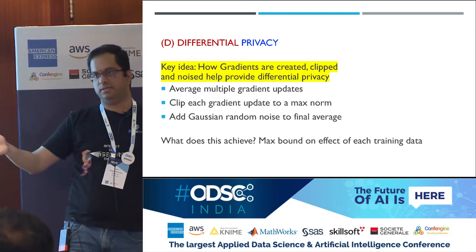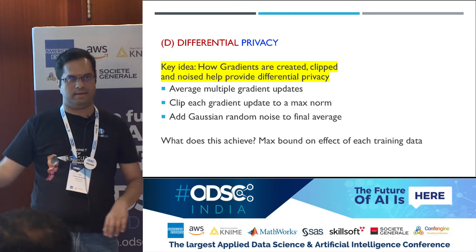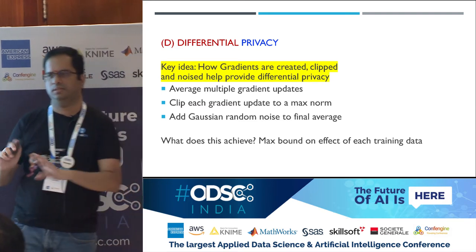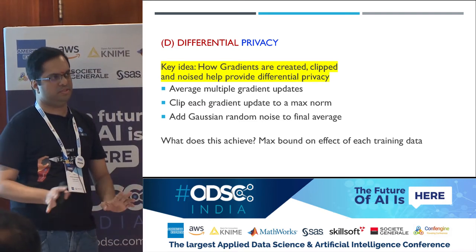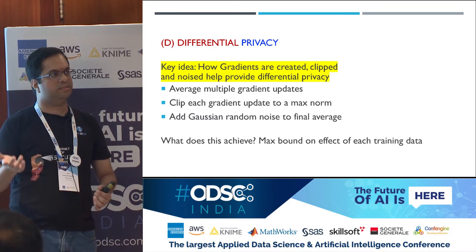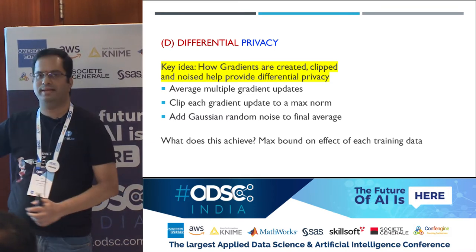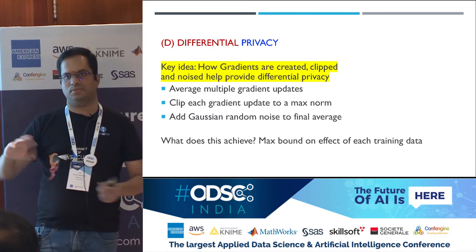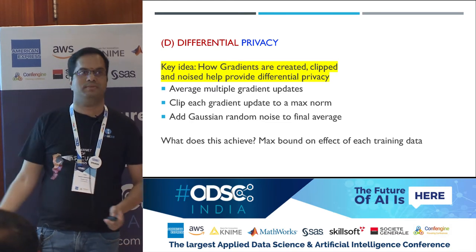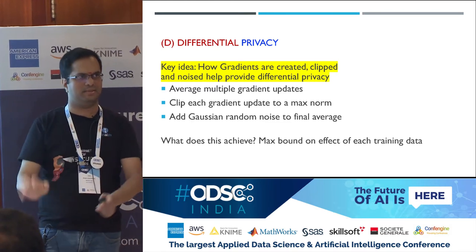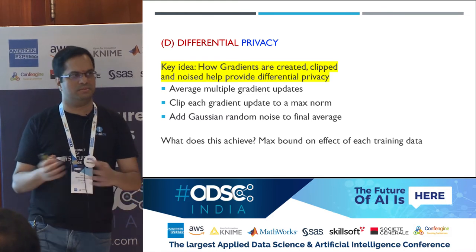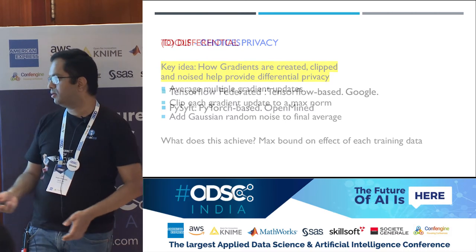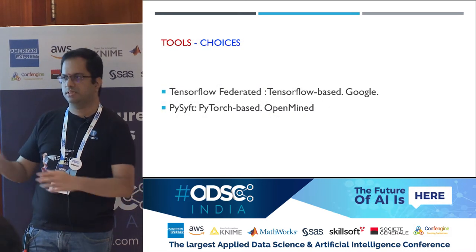So two things happen: you do training in a decentralized way and you add differential privacy. There is a third component called secure multiparty computation, which is at a very research stage. Even the gradients that are sent can be encrypted. The first successful implementation — the code was released really just last week. But decentralized training and differential privacy are the two common things that people currently use.